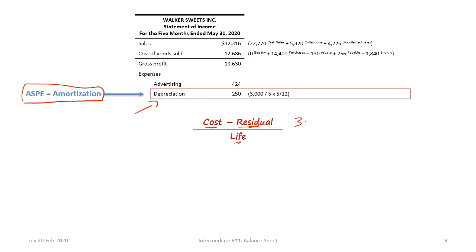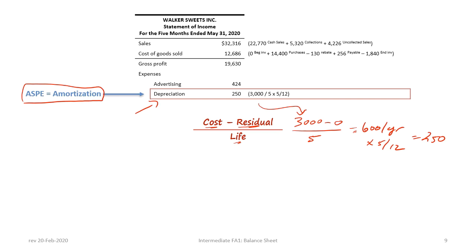We must prorate to the nearest whole month, so multiplying $600 by 5/12 gives us $250. It is very important to note that many students will want to use the half-year rule, which is only relevant for taxation purposes in the calculation of capital cost allowance or CCA. Unless the company has a stated policy of taking only one half year's depreciation in the year of acquisition, do not apply the half-year rule.